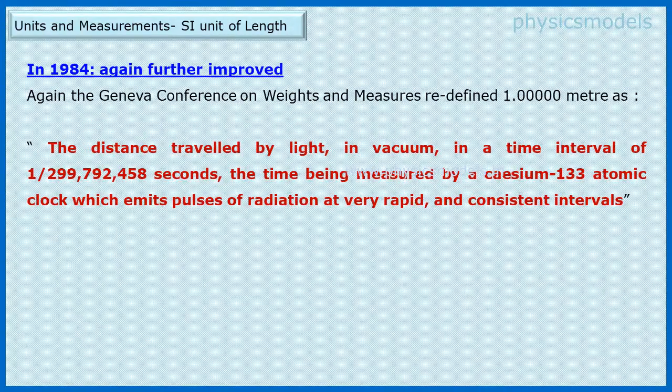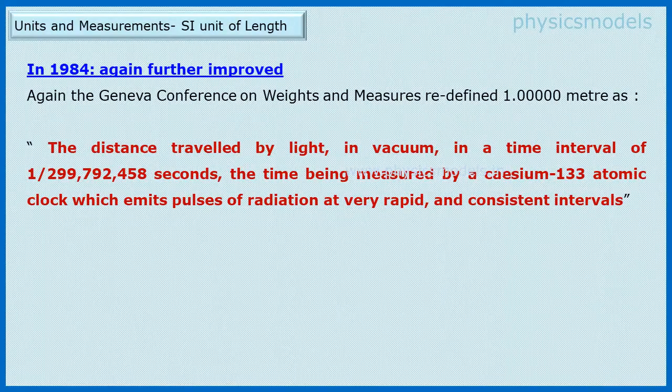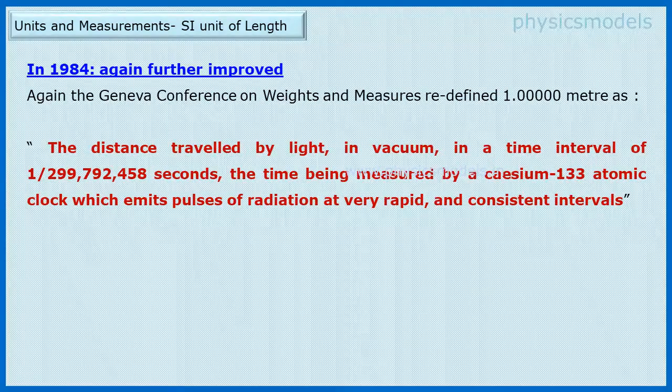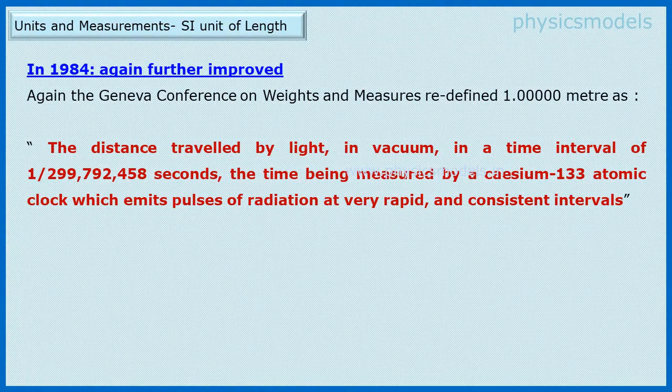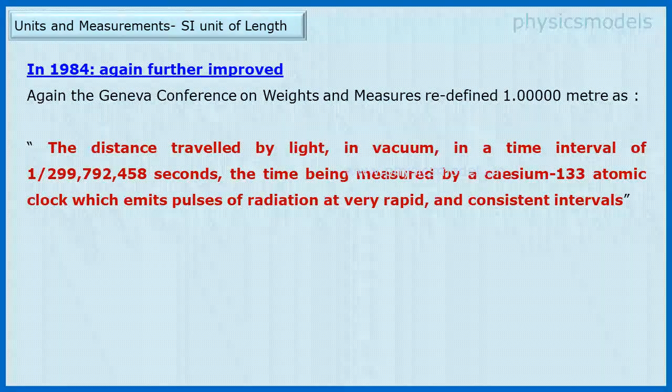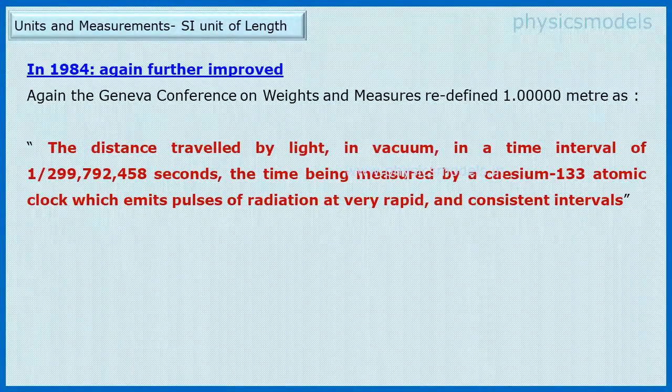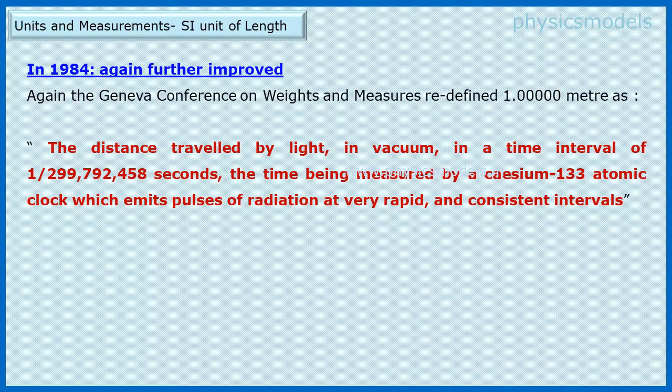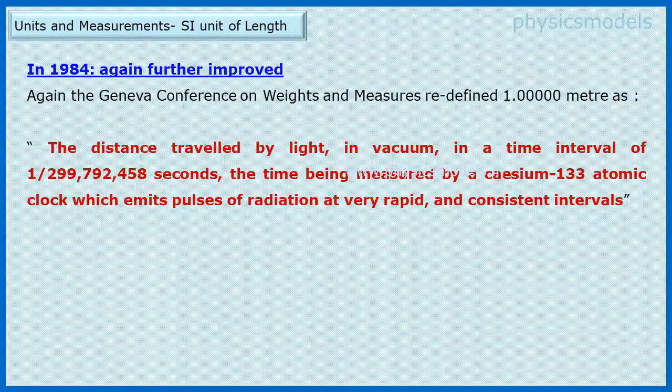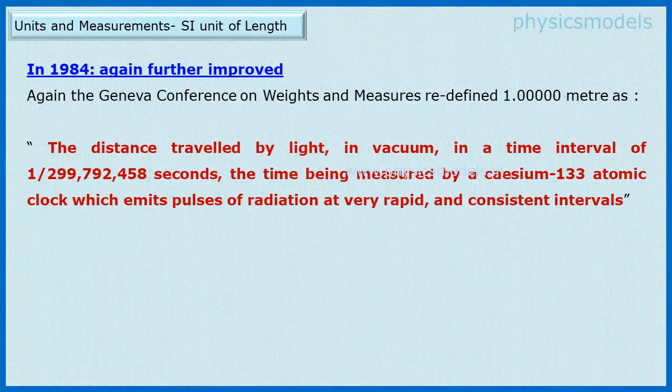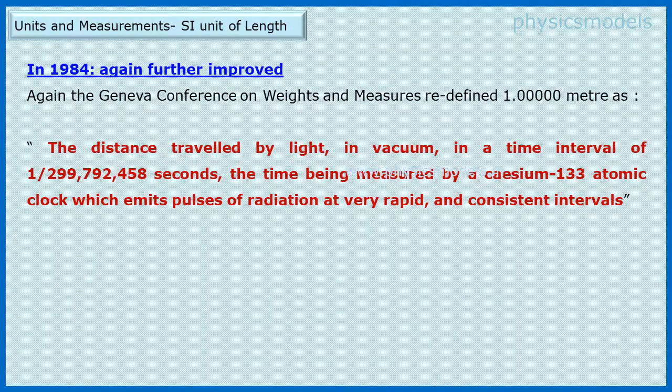The wavelength emitted by cesium-133 calculated over a time interval of 1 by 299,792,458 seconds. You can imagine such a small time interval. That distance would be exactly 1.0000 meters. That was the decision taken.